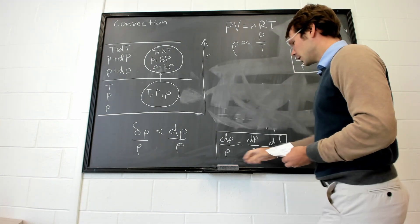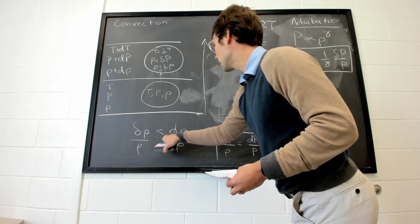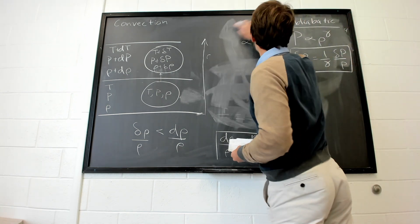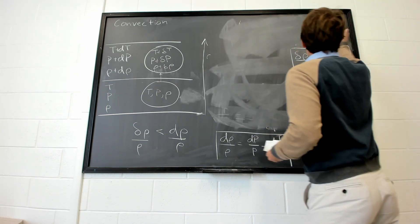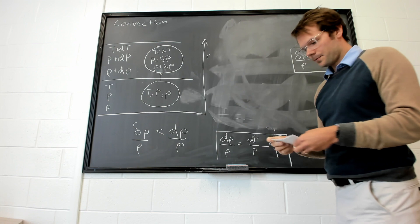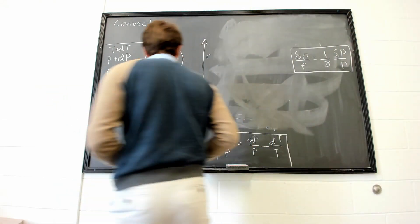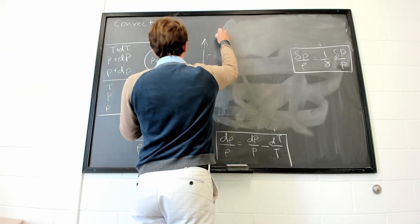Okay, great. We have delta rho over rho and d rho over rho. Let's put these equations together.